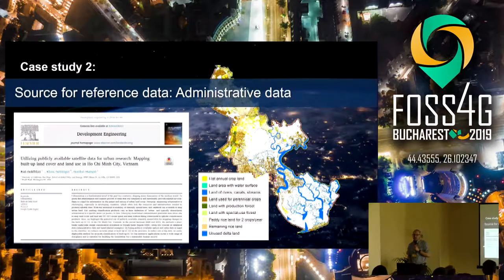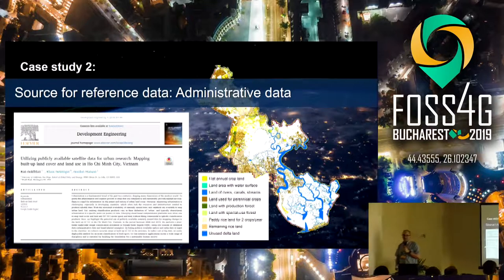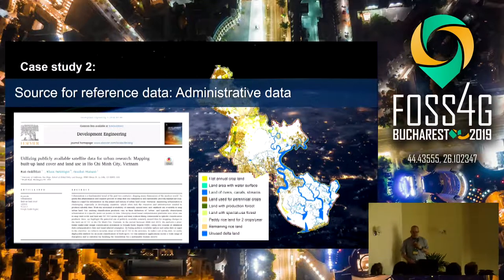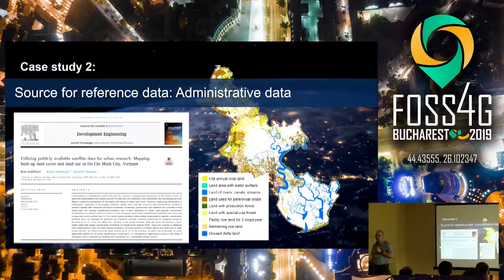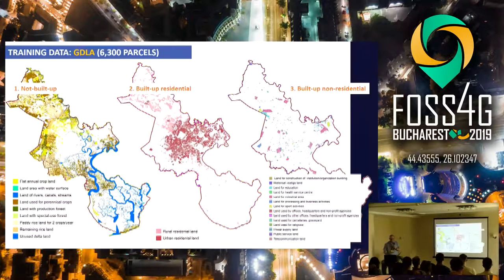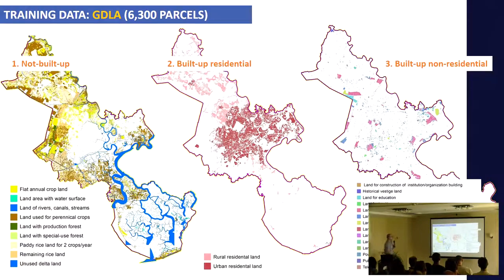The next application we show utilizes administrative data as a source for labeled examples. We did this study for the World Bank to map built-up land cover and land use in Ho Chi Minh City in Vietnam. We used administrative data as our source for training examples, and classified it into three classes: built-up residential, built-up non-residential, and not built-up.